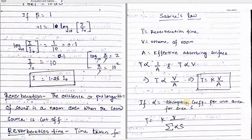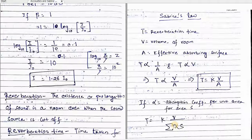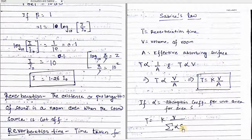For partitions it will be different, for walls it will be different. So every surface has a different absorption coefficient. Therefore, we add up the absorption coefficient multiplied by the surface area of each absorbing surface to get the total A.